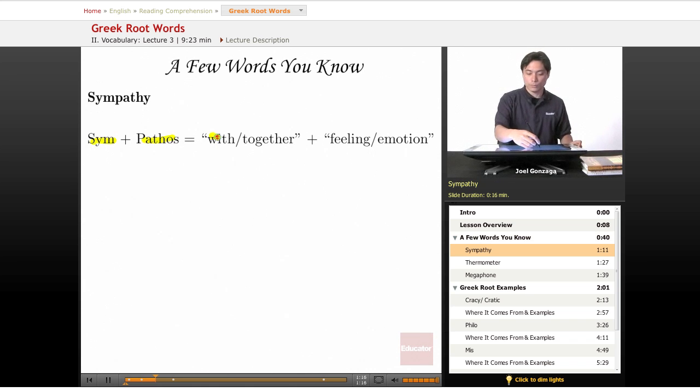With, which means with or together for sim. And then pathos is feeling or emotion. If you have sympathy for someone else, you feel what they feel.